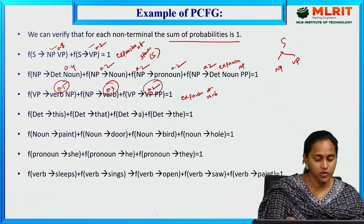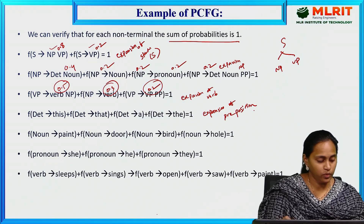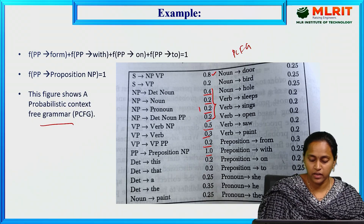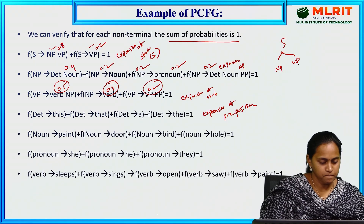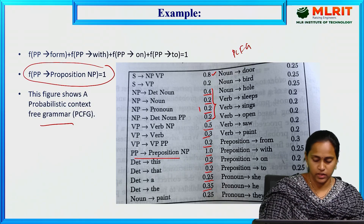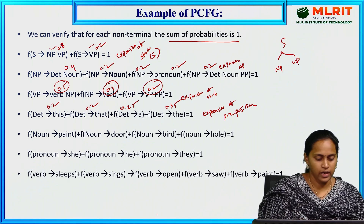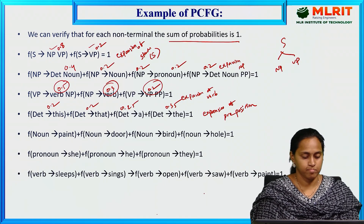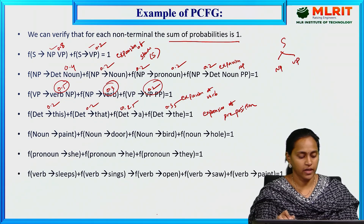Next is the expansion of preposition. PP → preposition noun phrase = 1. For the determiner expansion: 0.2, 0.2, 0.2, 0.25, 0.35 — these sum to 1. So 0.2 plus 0.2 plus 0.2 plus 0.25 plus 0.35 is equivalent to 1. This is the expansion of the preposition phrase.